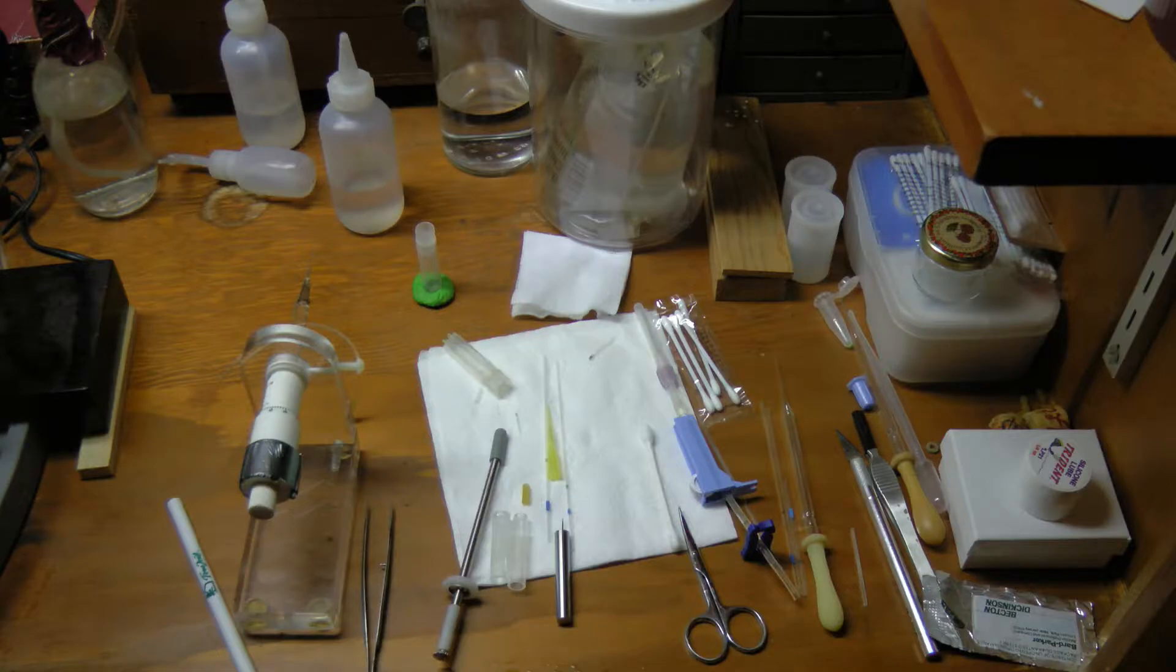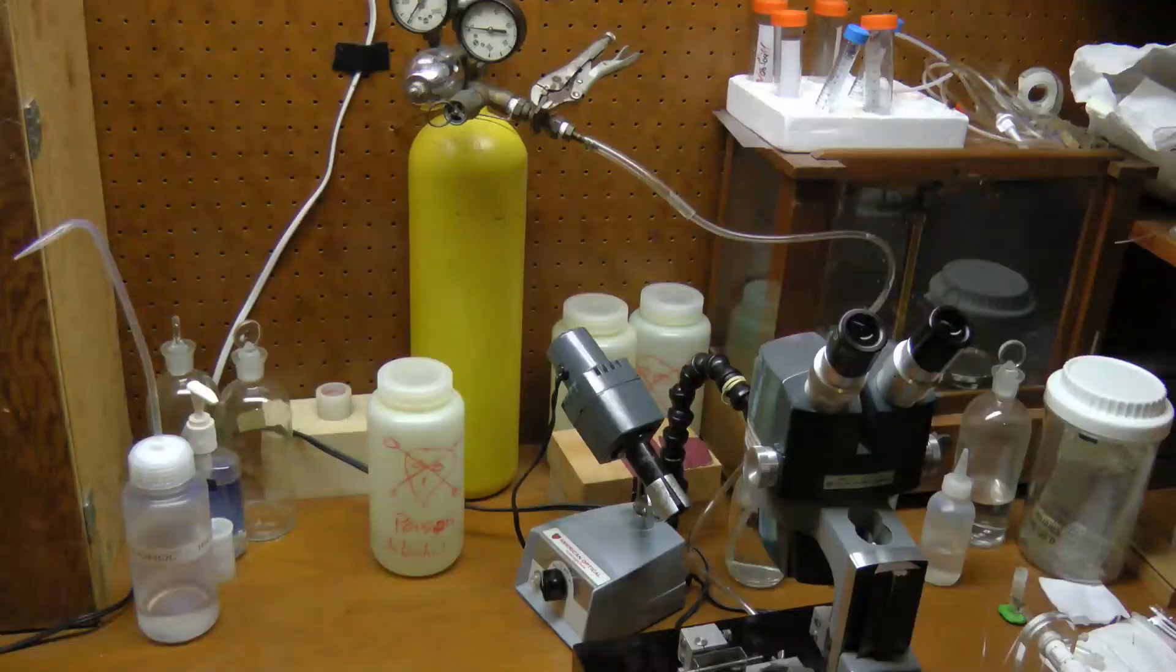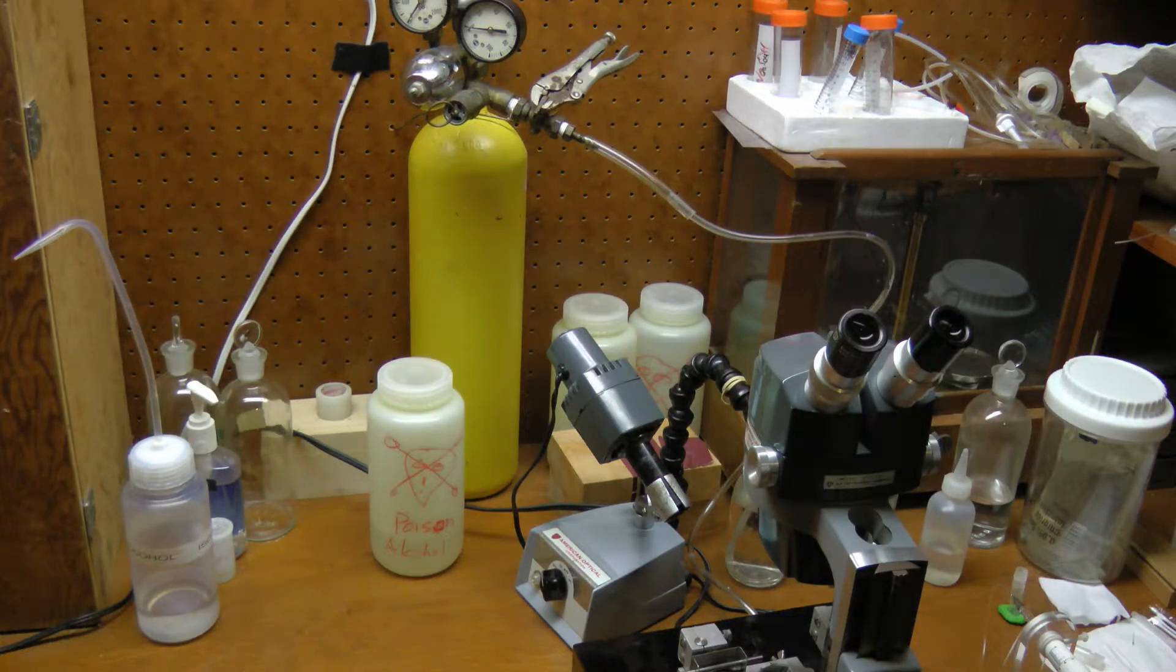It takes a variety of tools to do the insemination. It reminds me of a dentist's tray. The yellow cylinder contains carbon dioxide, which will be used to anesthetize the queen.